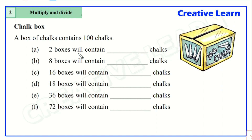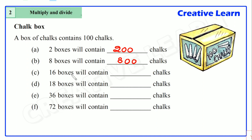We have to fill in the blanks according to the given number of boxes. First, two boxes will contain two hundred chalks. Next, eight boxes contain eight hundred chalks. Sixteen boxes contain sixteen hundred chalks. Eighteen boxes will contain eighteen hundred chalks.